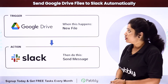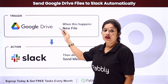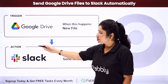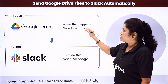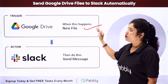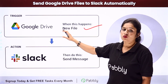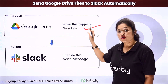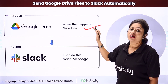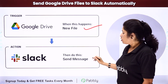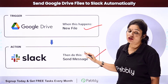Here your trigger application would be Google Drive and your action application would be Slack. So whenever you upload a new file into your Google Drive, automatically the same file will be shared with your team on the Slack channel along with a message.